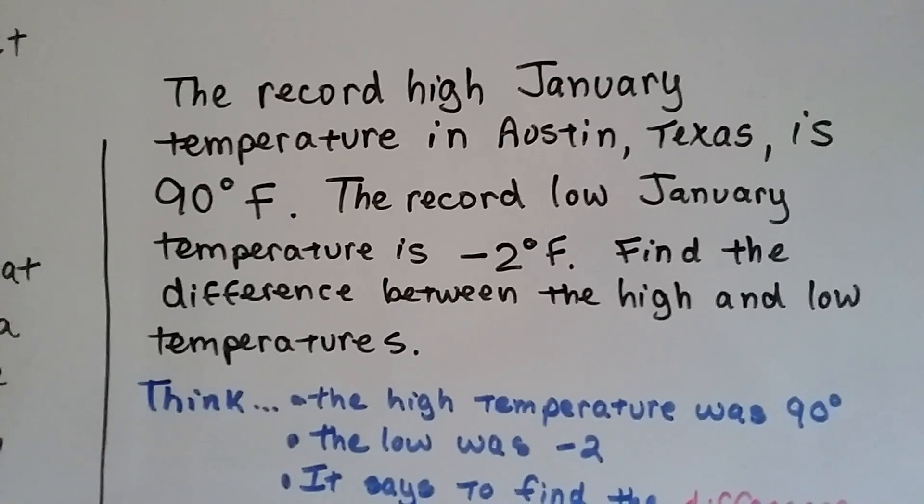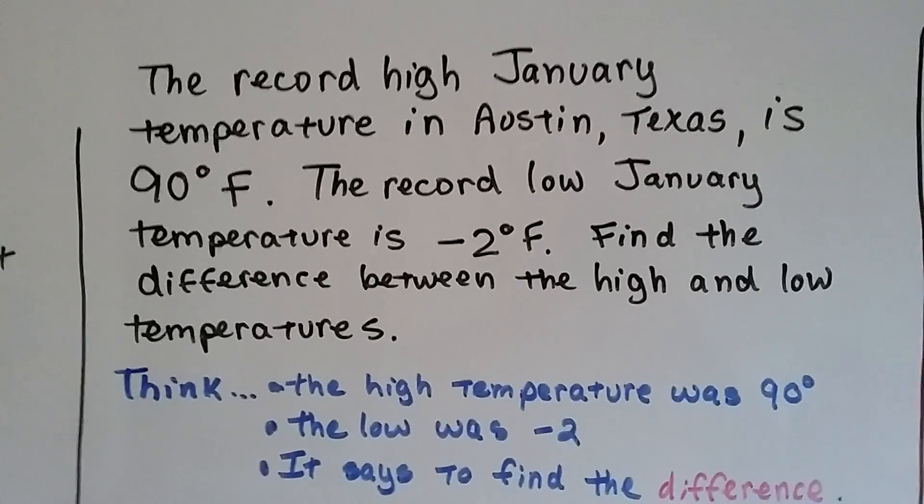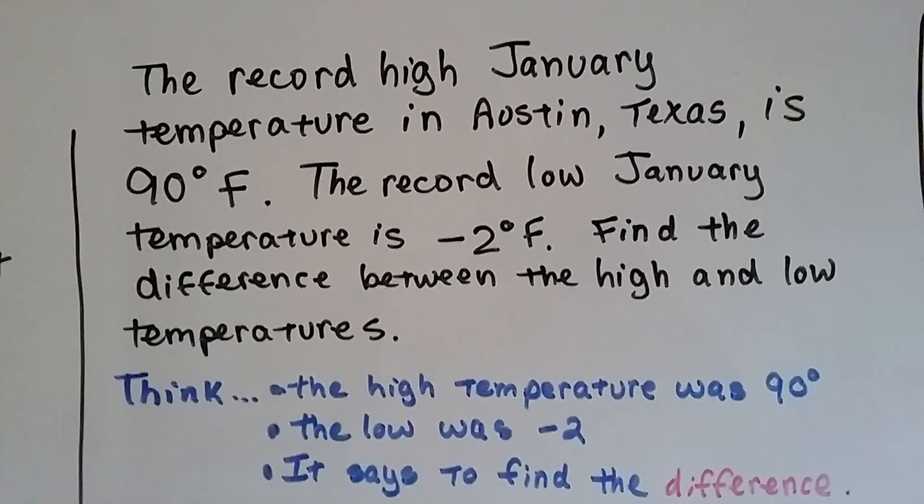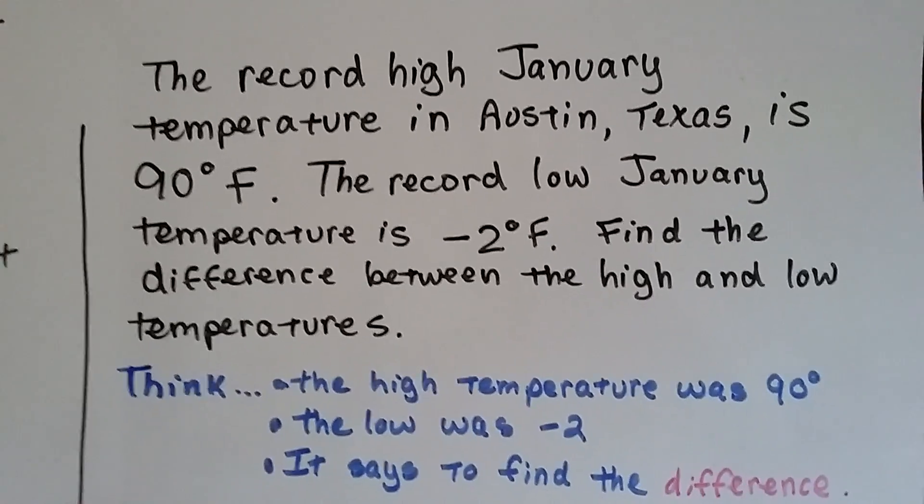The record high January temperature in Austin, Texas is 90 degrees Fahrenheit. The record low January temperature is negative 2 degrees Fahrenheit. Find the difference between the high and low temperatures.